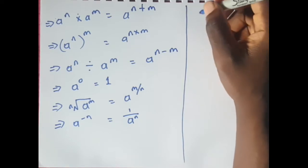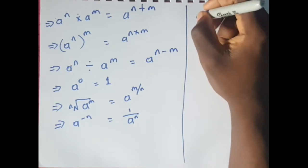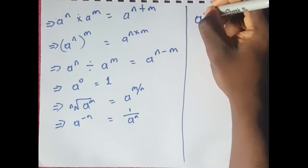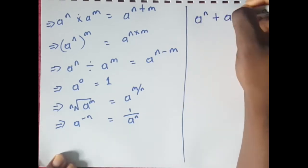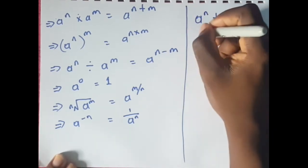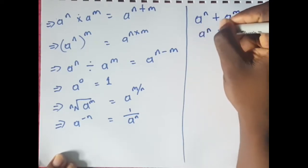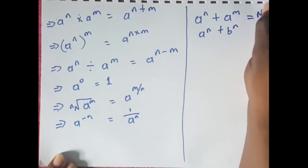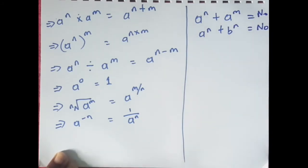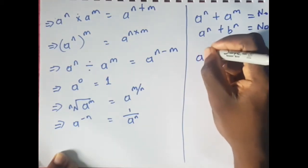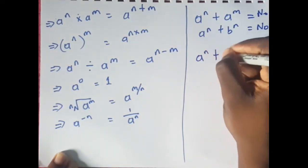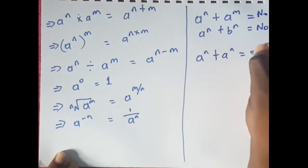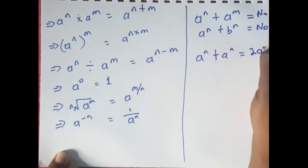In order to add two indices, they must have the same base. So a raised to the power of n cannot be added to a raised to the power of m, and it can't be added to b raised to the power of n. The same thing goes for subtraction — they must have the same base. So if you have a raised to the power of n plus a raised to the power of n, your answer would be 2a raised to the power of n.